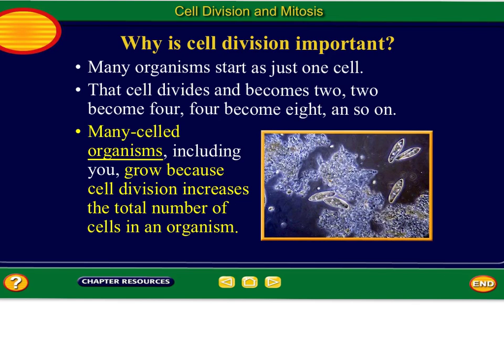So it tells us here that a cell divides and becomes two, then two divides and becomes four, four divides and becomes eight, and so on and so on. What I have in yellow up here comes from a sentence in your notes. So your guided notes — does it start out: 'Many-celled organisms including you grow because cell division increases the total number of cells in an organism'?